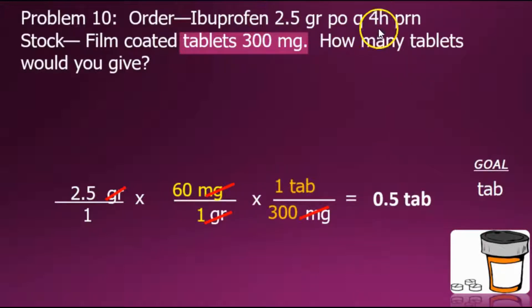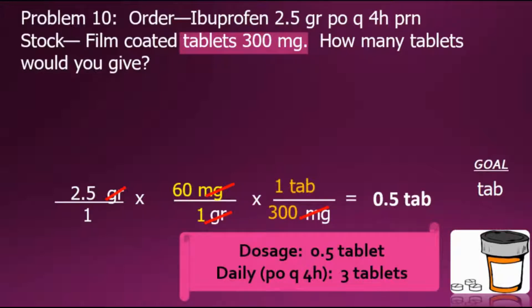The original orders were every 4 hours. In a day, 24 hours divided by 4 gives 6 possible dosages administered. Taking half a tablet times 6 gives a possible maximum dosage of 3 tablets per day.